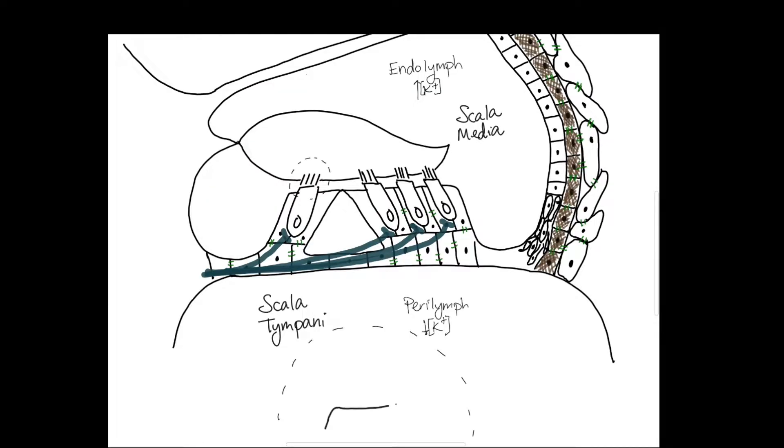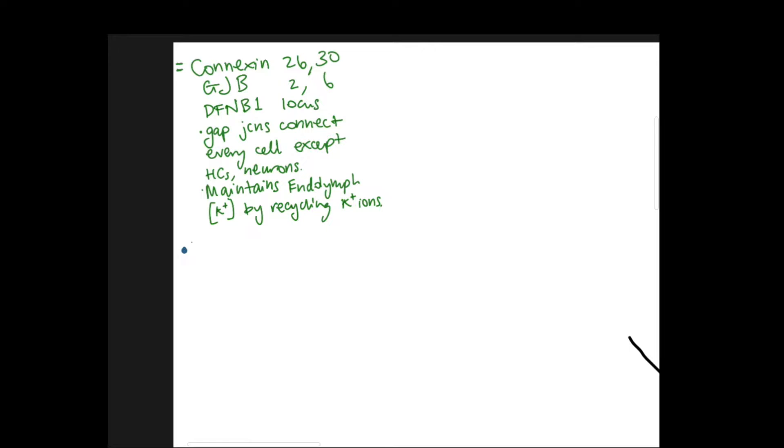The next non-syndromic hearing loss gene is stereocillin. So for that we'll draw a little magnified view of the stereocilia on the hair cells. Stereocillin is encoded by the STRC gene on the DFNB16 locus. Its function is to connect the kinocilium to the tectorial membrane and then it connects the stereocilia to one another. Interestingly it's also associated with infertility in males because this STRC gene is linked to CATSPR2 which is a calcium channel necessary in sperm and they're always linked together. So in males you'll see hearing loss with infertility.